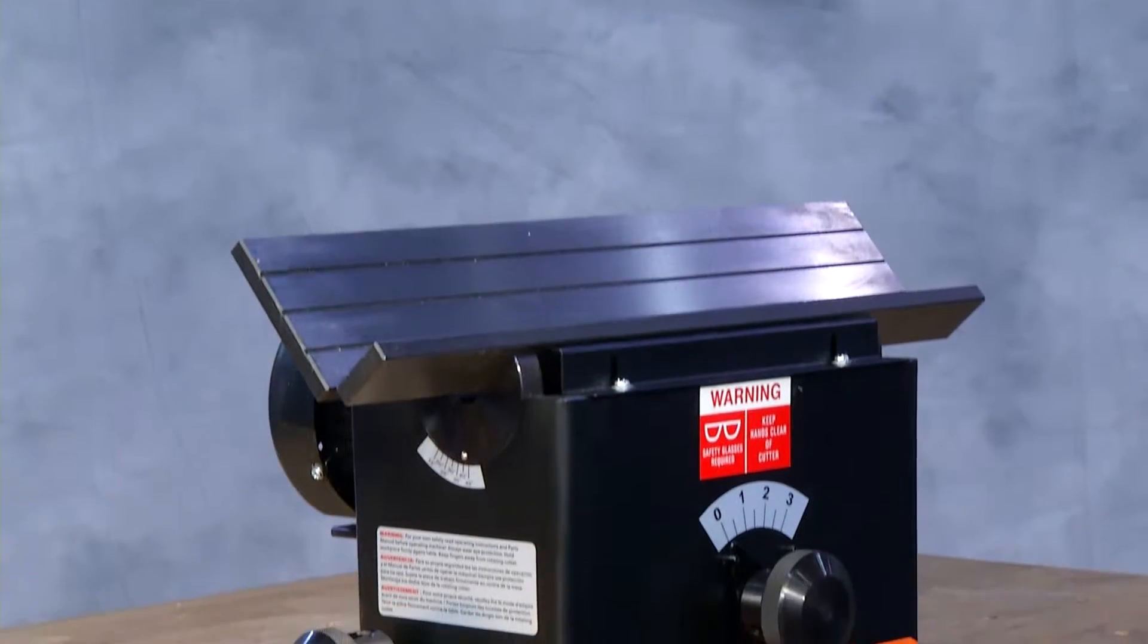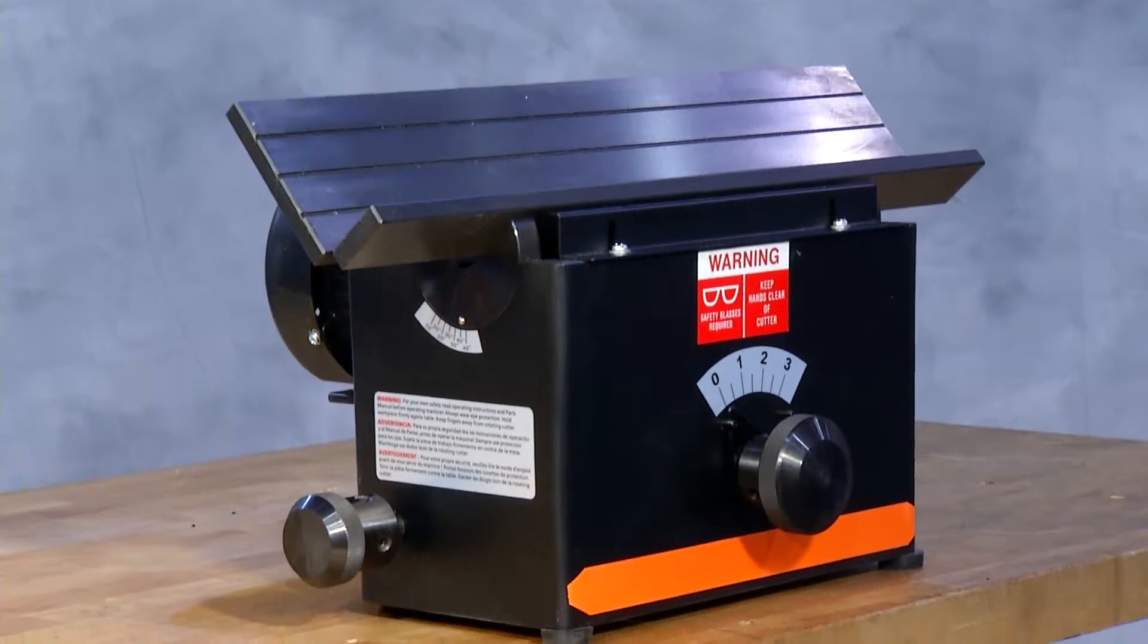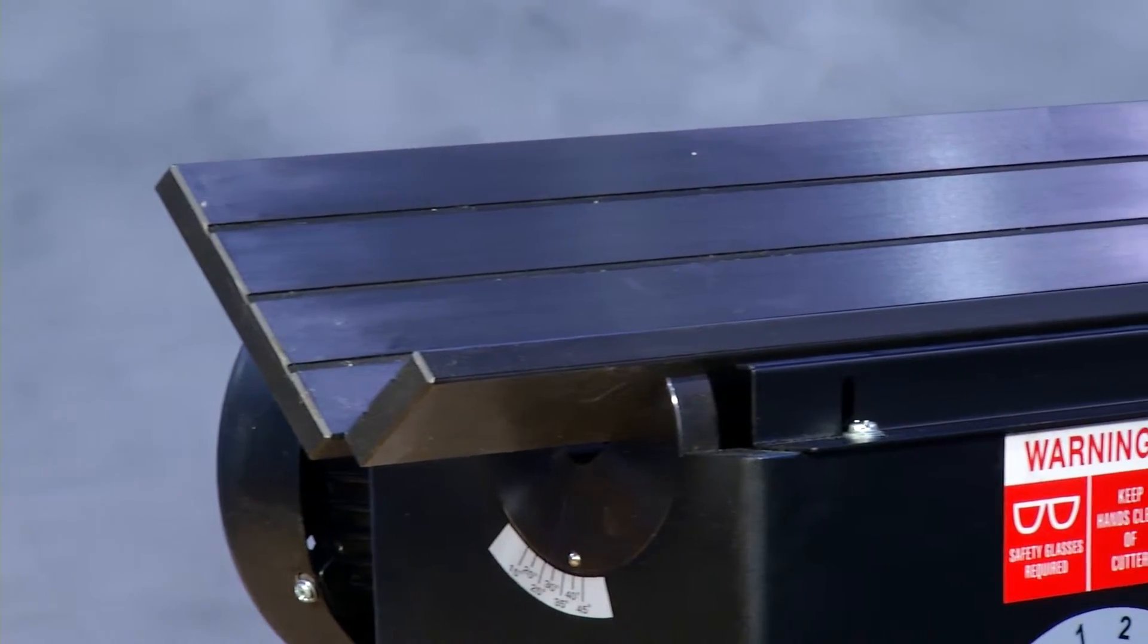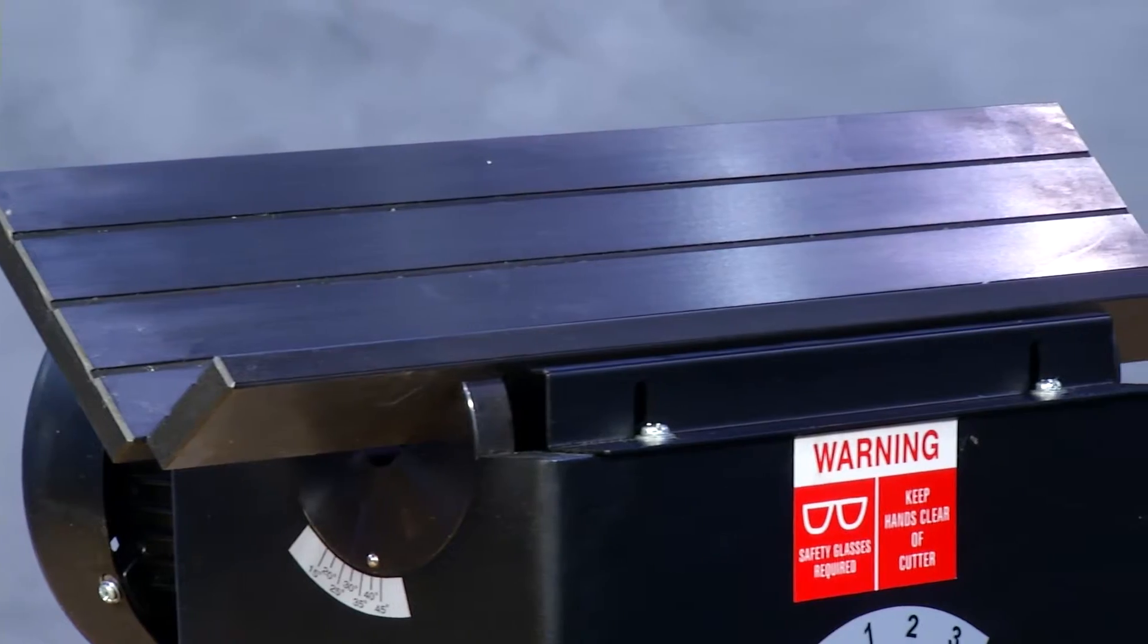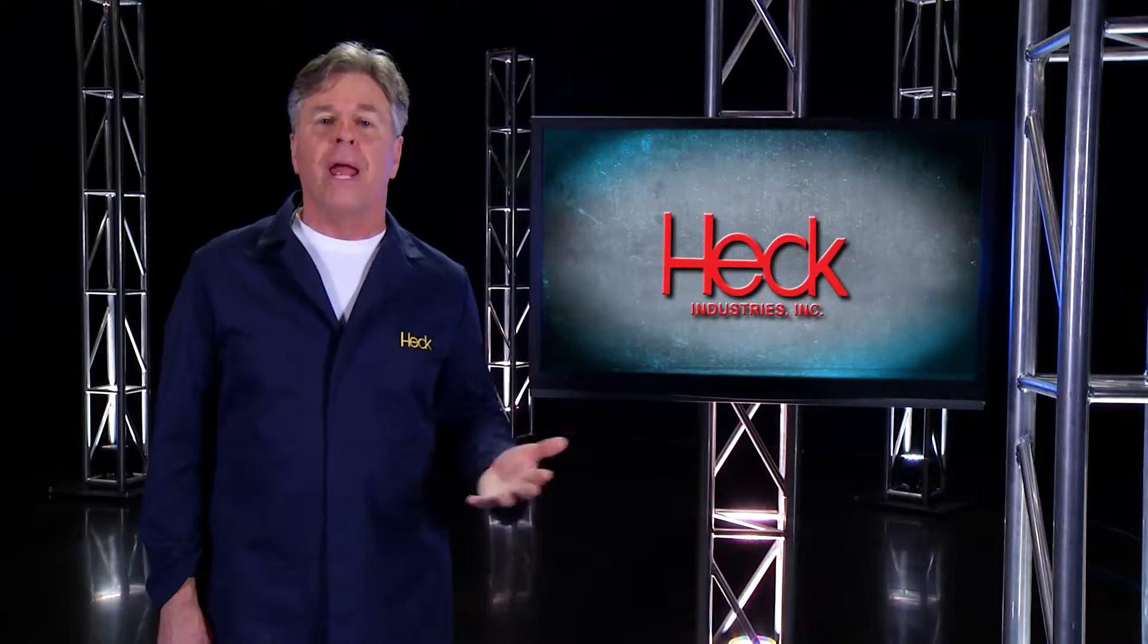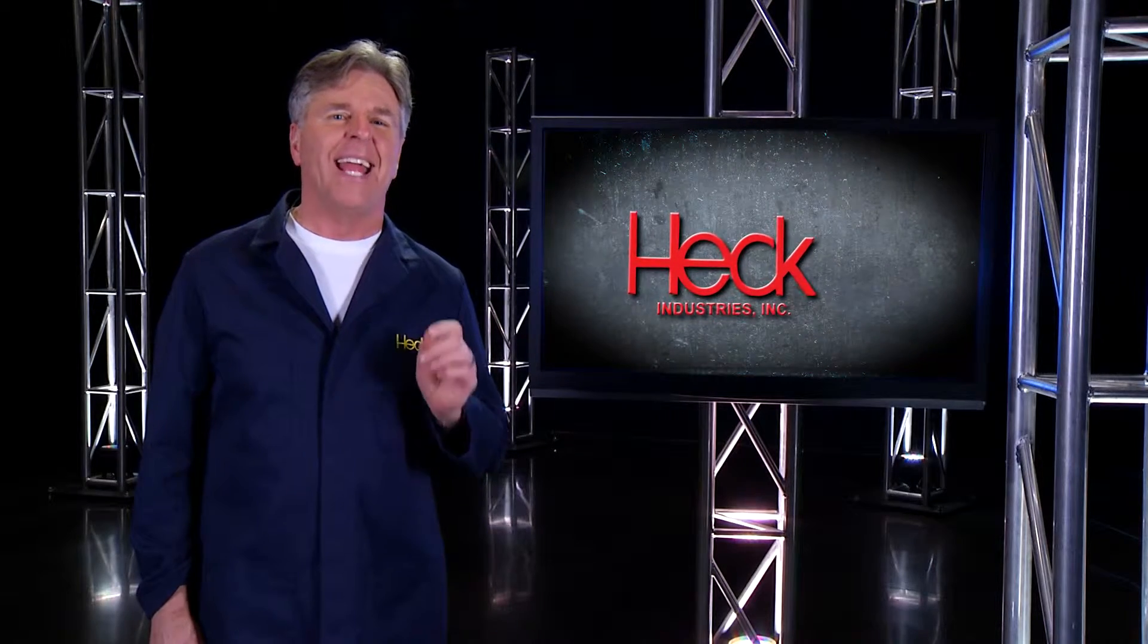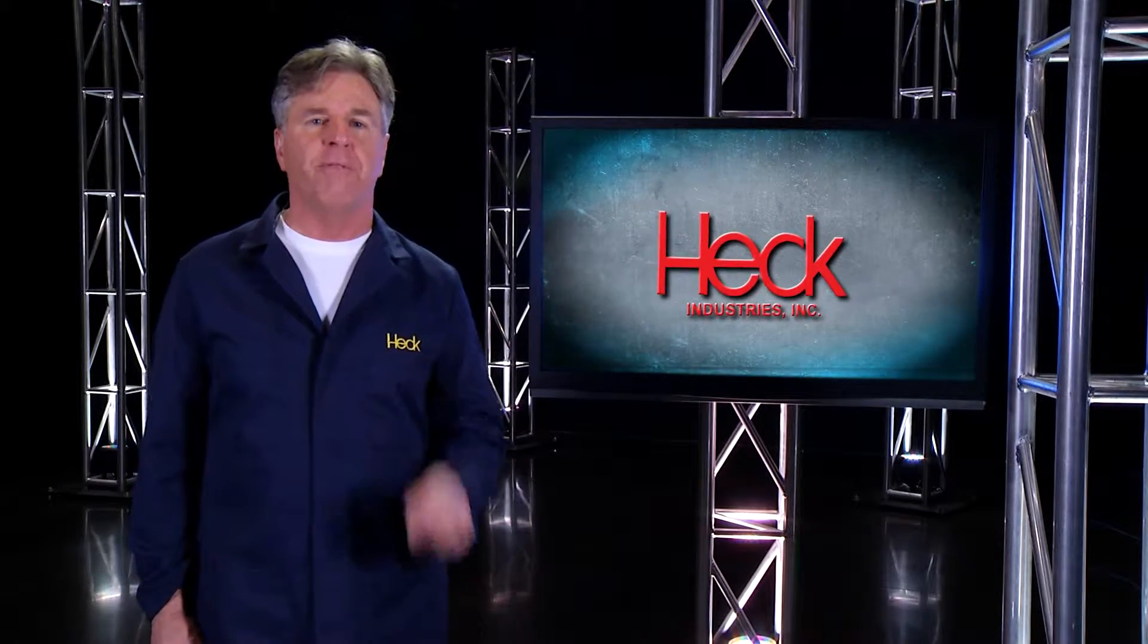The VA400 is the tool you need for chamfering any material that can be machined with carbide. Therefore stainless steel, cold roll, hot roll, aluminum or any composites can be machined up to a 3/16 inch bevel at any degree from 15 to 45 degrees.